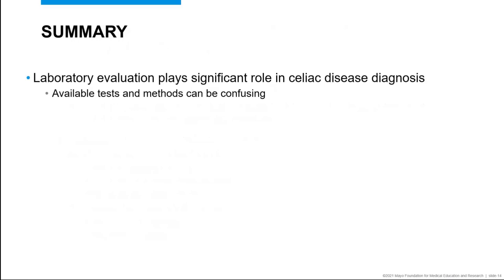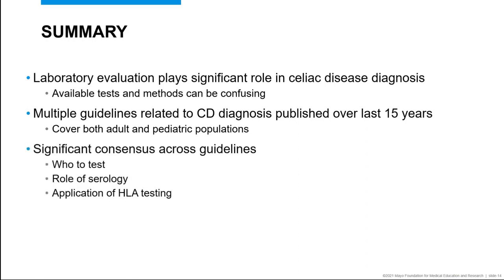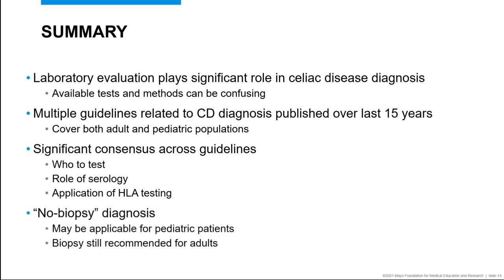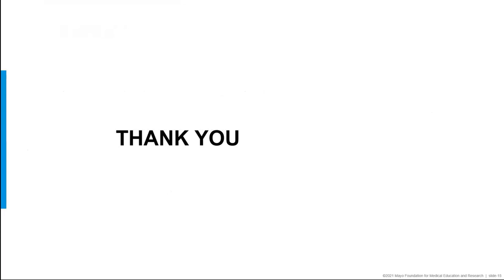In summary, the laboratory plays a significant role in the evaluation of patients with suspected celiac disease, although often this testing and how to apply it to patient care can be confusing. Multiple diagnostic guidelines for celiac disease have been published over the last 15 years, covering both adult and pediatric populations. There is good consensus across the guidelines in terms of who to test, the role of serology, and the application of genetic testing. The most controversial aspect of celiac disease diagnostics is whether a biopsy can be avoided in certain individuals — the so-called no-biopsy diagnosis. While this appears to be a viable and attractive option in children, a biopsy continues to be relevant for adults, providing both diagnostic and prognostic information. Thank you. I hope this presentation has provided you with useful information regarding diagnostic guidelines for celiac disease. Thank you for your participation.